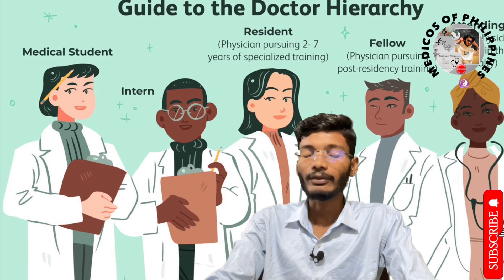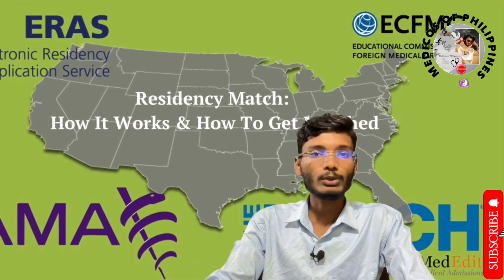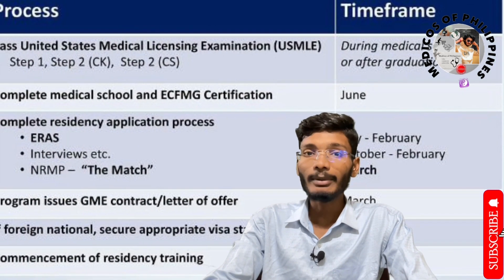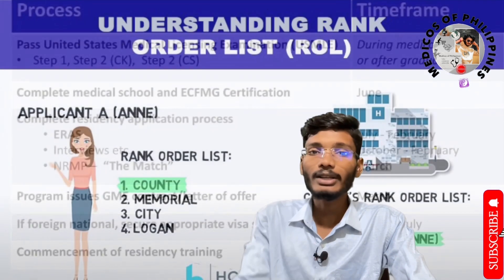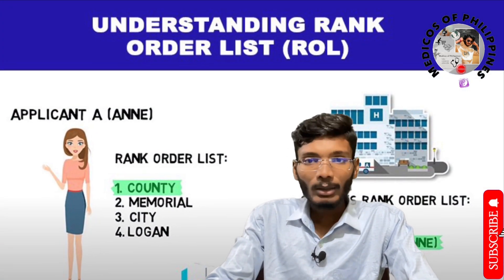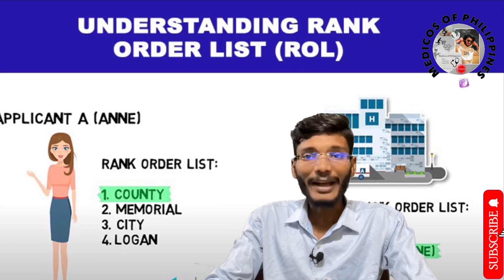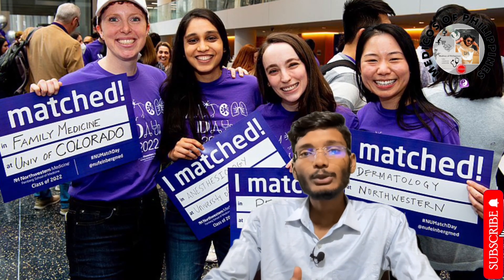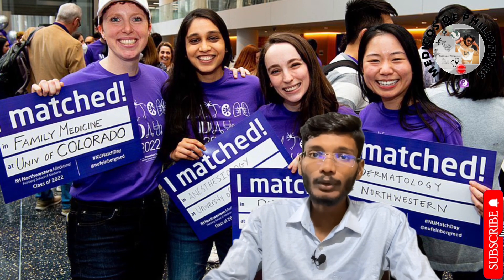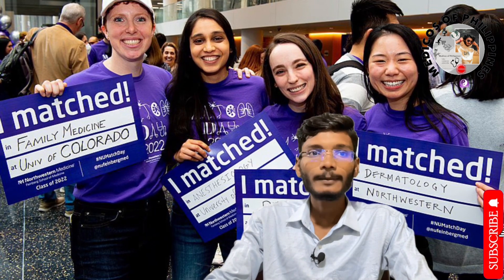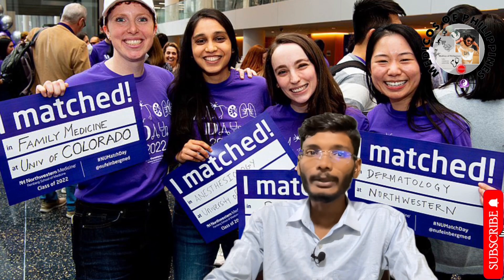After finishing your NRMP match, you should apply for the ERAS application, which is available on the portal. After the ERAS application, they will call you for an interview. After finishing your interview, they will create a list called the ROL — Rank Order List — which is like a merit list. After the ROL, there is a match date called the NRMP result date. If your score is good, you will get a good NRMP result and a good rank order listing.